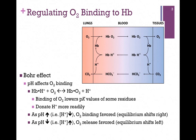You'll also want to keep in mind the law of mass action as we examine this equilibrium. As pH increases, that represents a decrease in the concentration of H-plus. So by the law of mass action, as we pull away a component, we're pulling the equilibrium in that direction. As H-plus concentration decreases, we're favoring oxygen binding — the equilibrium shifts to the right.